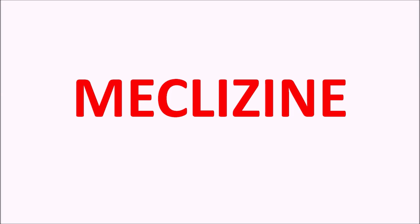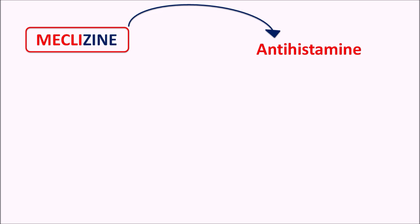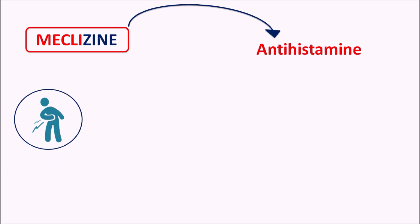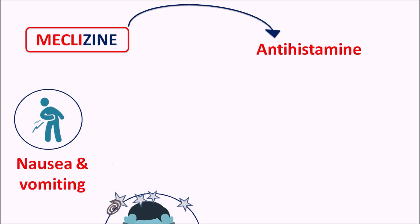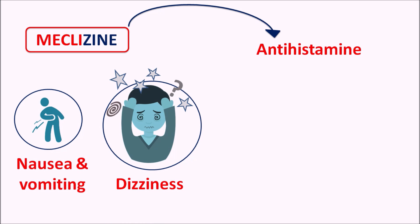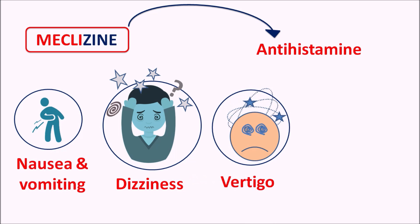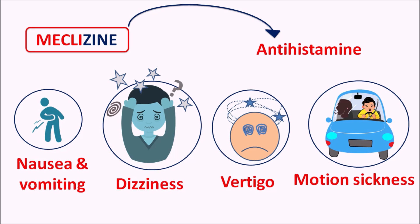Today in this video we are going to discuss Meclizine. The suffix '-zine' indicates this drug is a piperazine derivative. This drug blocks H1 receptors and is classified as an antihistamine. It is a piperazine derivative useful in the treatment of nausea and vomiting, dizziness associated with disturbance in the vestibular system, vertigo where there is a reeling sensation due to a dysfunctional vestibular system, and motion sickness associated with nausea and vomiting.